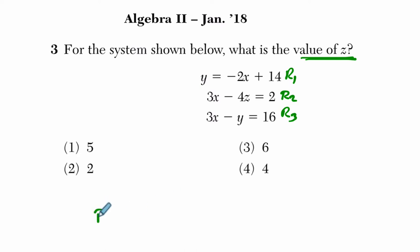So if I do R2 minus R3, what I'm going to get is 3x minus 3x is 0x, negative 4z, nothing to correspond and subtract, but then we're subtracting a negative y, so that's plus y, and then 2 minus 16 is negative 14.